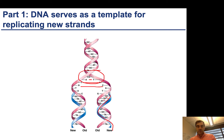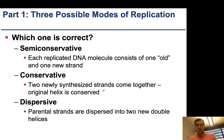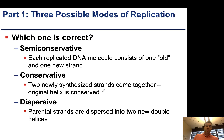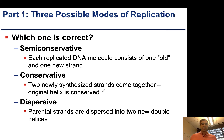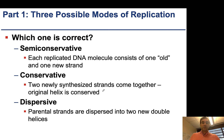Eventually if this strand continues, then you'd have a C here, an A here, and a T here. One of the first things that researchers were interested in was understanding the nature of how this replication occurred, and they came up with three different models.